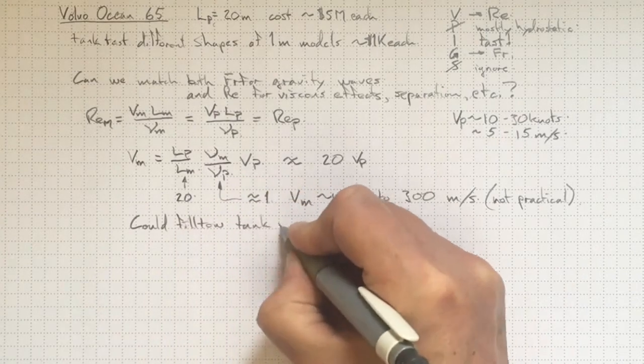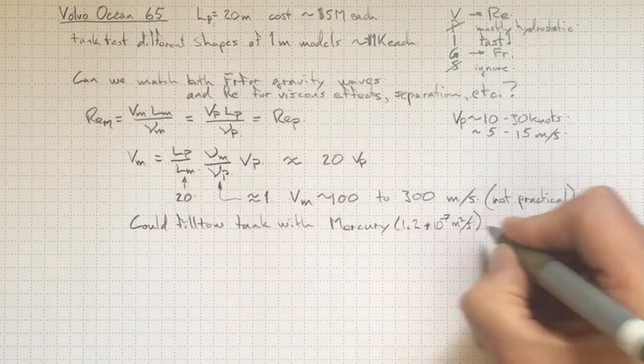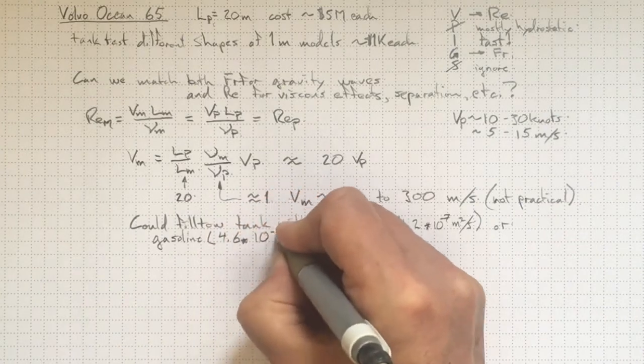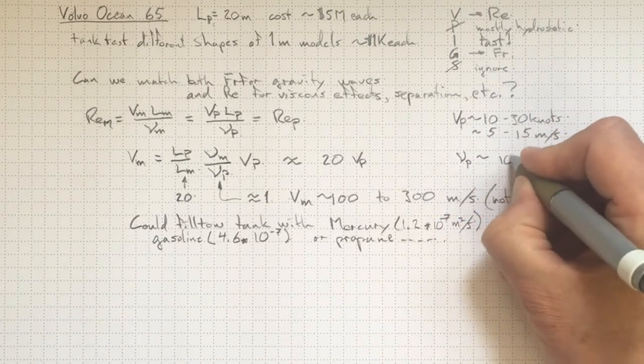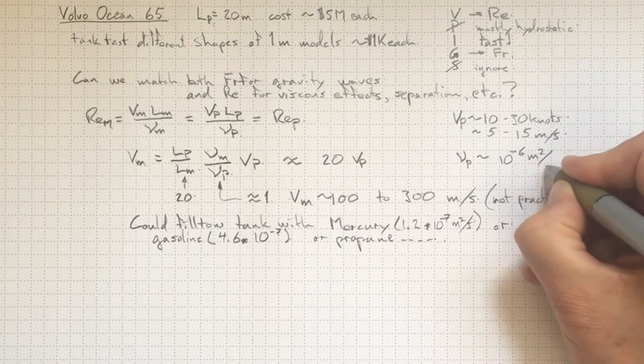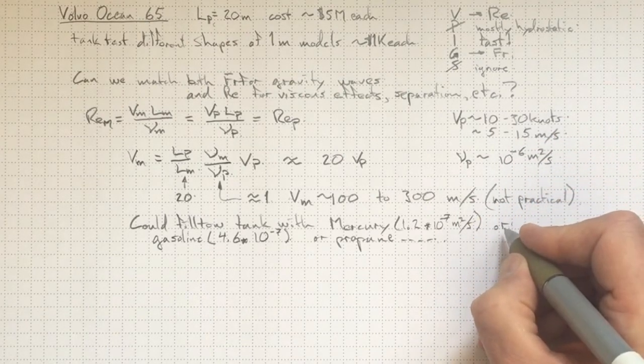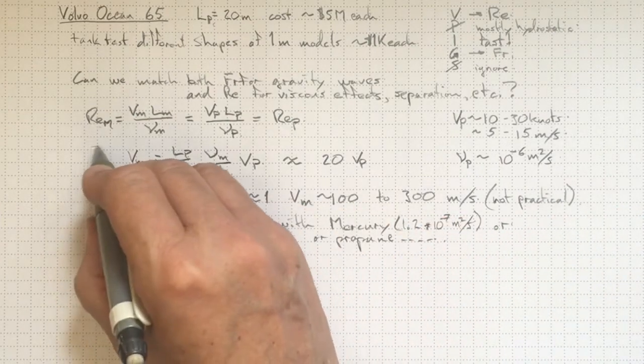So we could fill the tow tank with something like mercury or gasoline or propane. I don't think that's a good idea. I think we're going to be stuck with water just like our prototype at around 10 to the minus 6 meters squared per second.